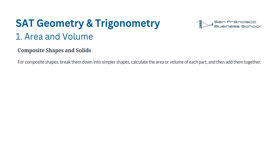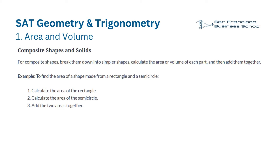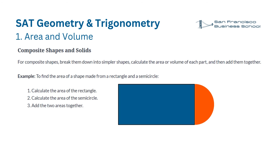Composite shapes and solids. For composite shapes, break them down into simpler shapes, calculate the area or volume of each part, and then add them together. For example, to find the area of a shape made from a rectangle and a semicircle: 1. Calculate the area of the rectangle. 2. Calculate the area of the semicircle. 3. Add the two areas together.